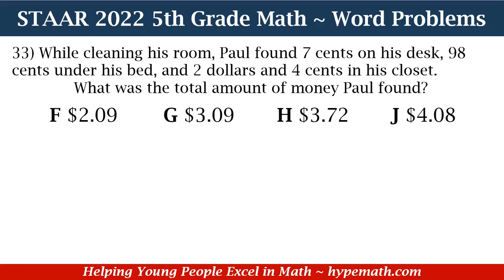Let's dive into question number 33. While cleaning his room, Paul found $0.07 on his desk, $0.98 under his bed, and $2.04 in his closet. What was the total amount of money Paul found? Is it F, $2.09; G, $3.09; H, $3.72; or J, $4.08?